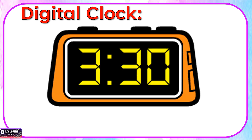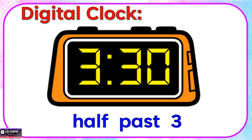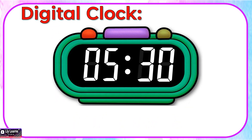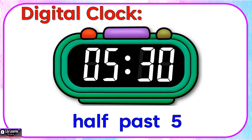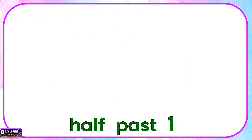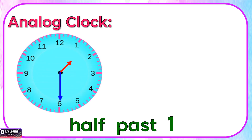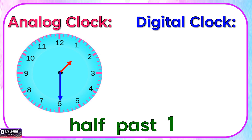In a digital clock, we read this as half past 3. The time is half past 5. Let's see half past 1 in an analog clock and in a digital clock.